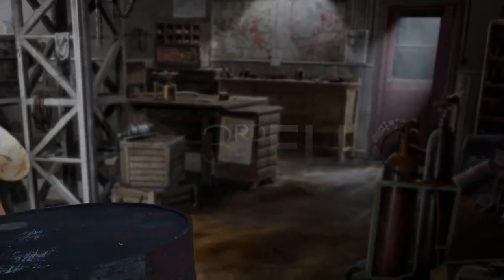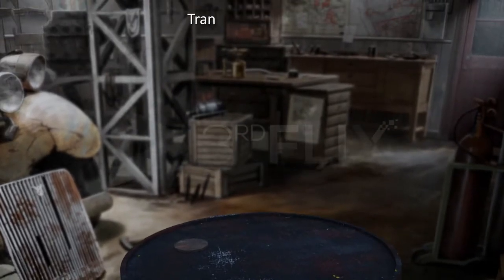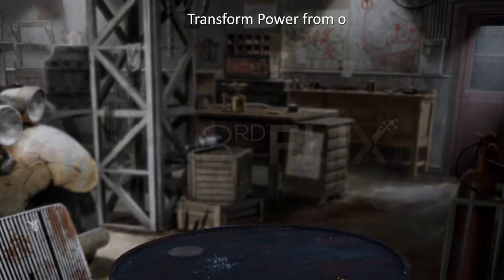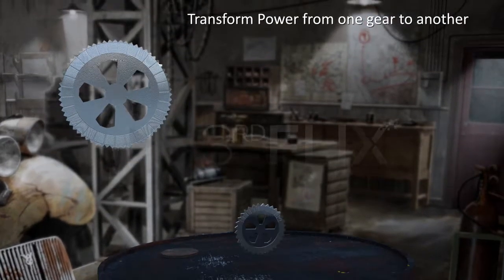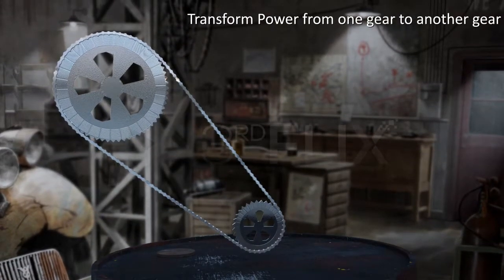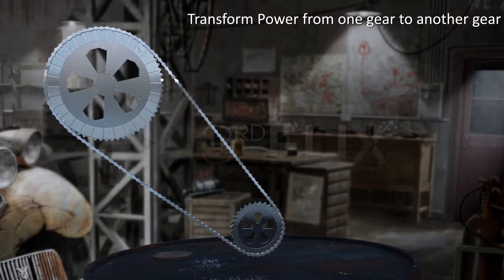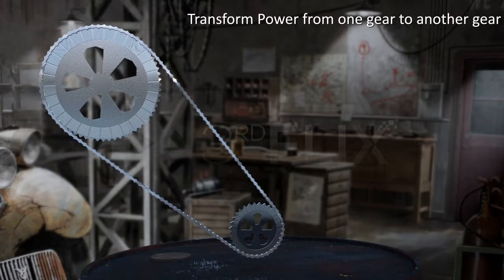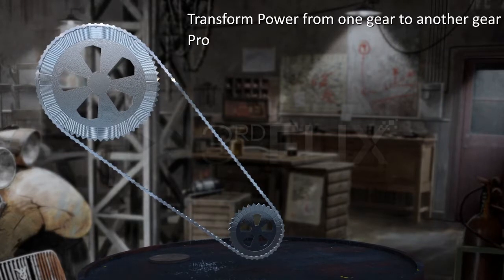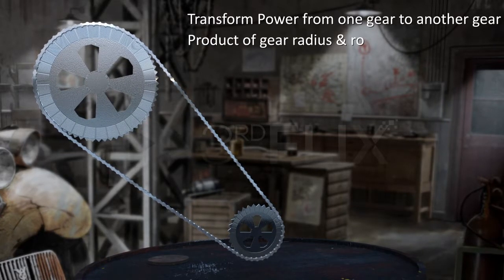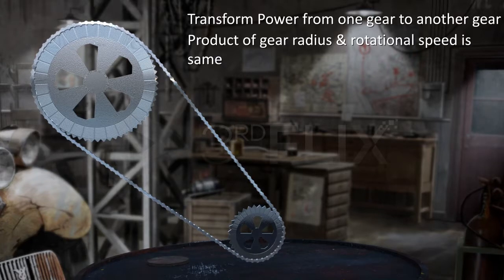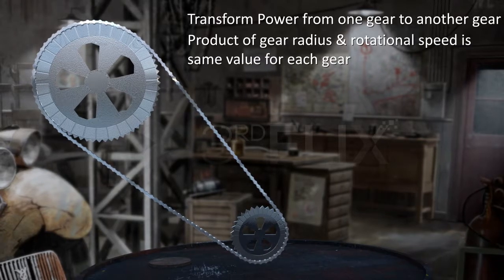To understand this better, let's observe a gear system where a gear chain connects at least two gears together in order to transfer power from one to another. There exists a well-established relationship between the rotational speeds of the two gears in a gear chain, which is the product of a gear's radius and its rotational speed is the same for each of the gears.